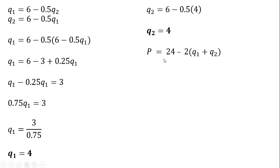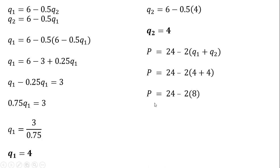To get the market price, recall the inverse demand. Plugging in Q₁ = 4 and Q₂ = 4, we get 24 minus 16, so the market price is $8. Each firm will sell 4 units of output at a price of $8.